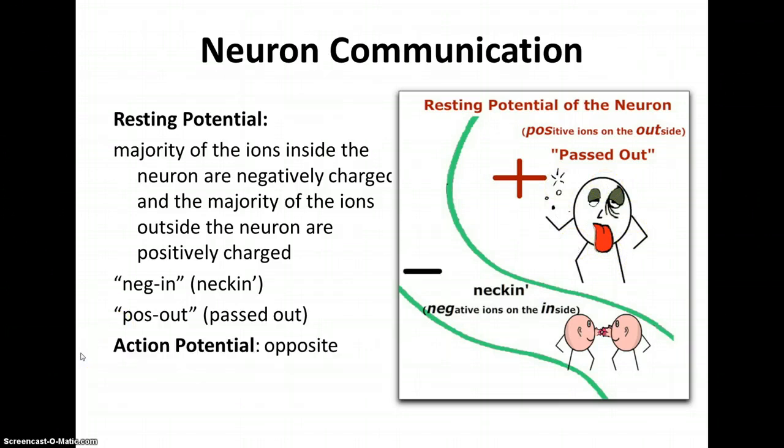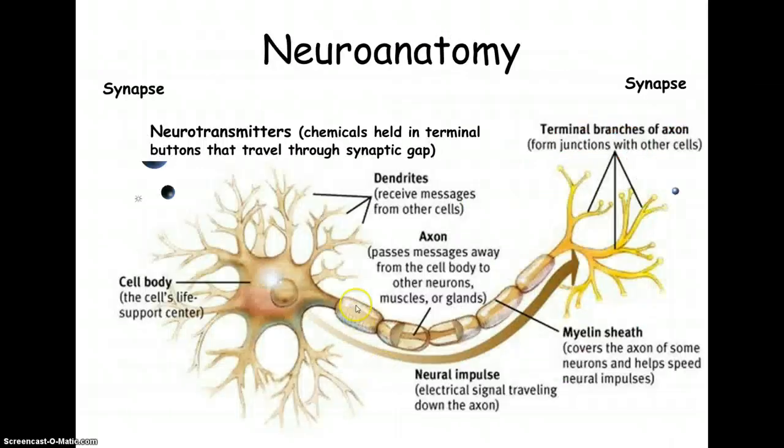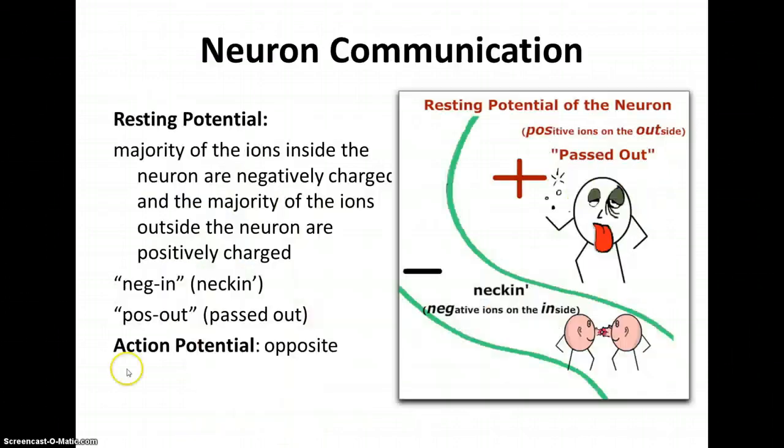And then we have the action potential where everything changes. So these axons have gates. When the first gate opens, the positively charged ions flood through this channel. And that causes the next gate to open and the next gate to open. So this is how everything switches. So all the positive ions flood through the axon and the negative ions kind of get pushed out.